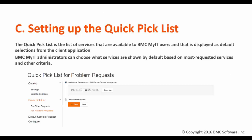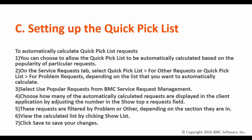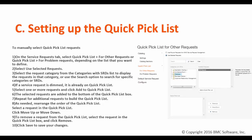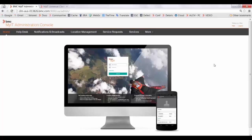To set up a QuickPix list, you have two options available. You can use popular requests from BMC Service Request Management, which will automatically calculate the QuickPix list, or you can manually create the QuickPix list for problem requests and other requests. Let's take a look at how to configure this — go to the MyIT administration console and go to the service request tab.